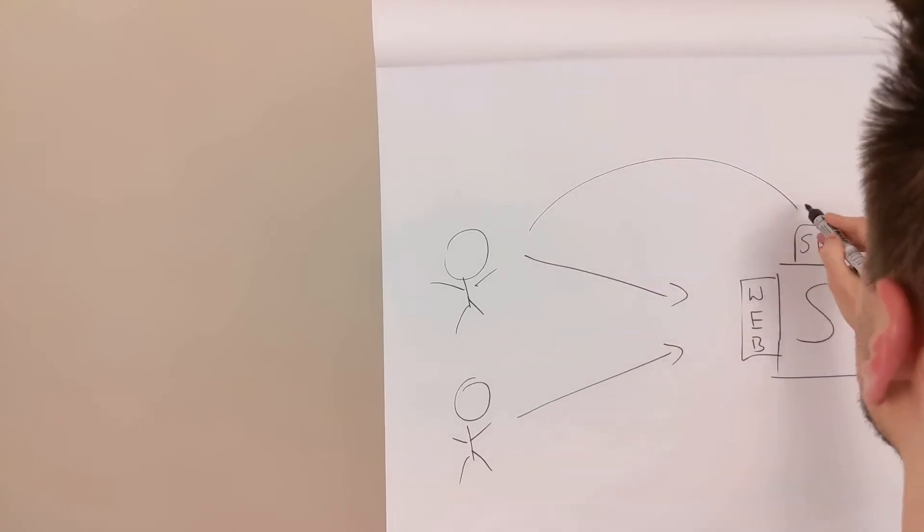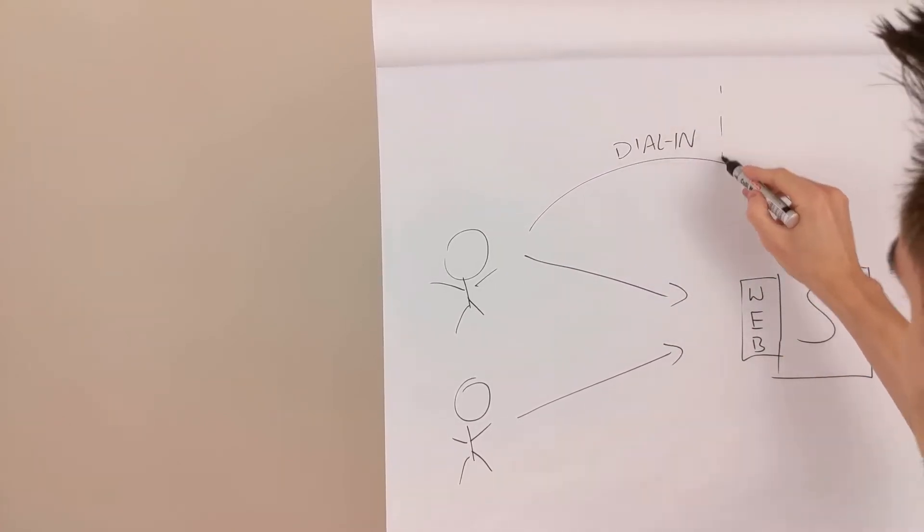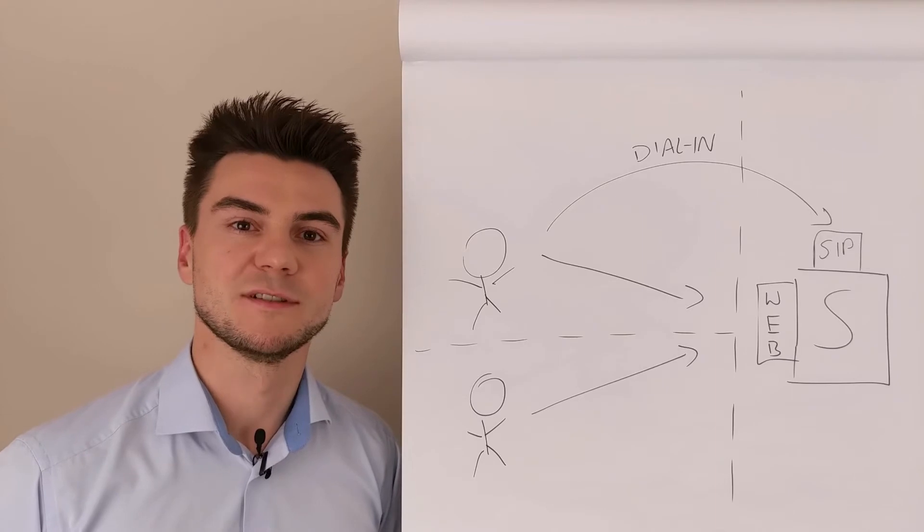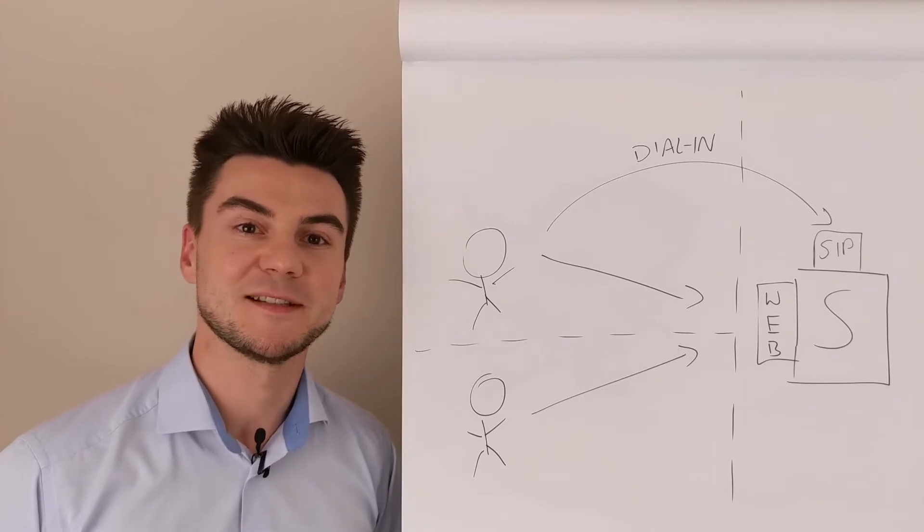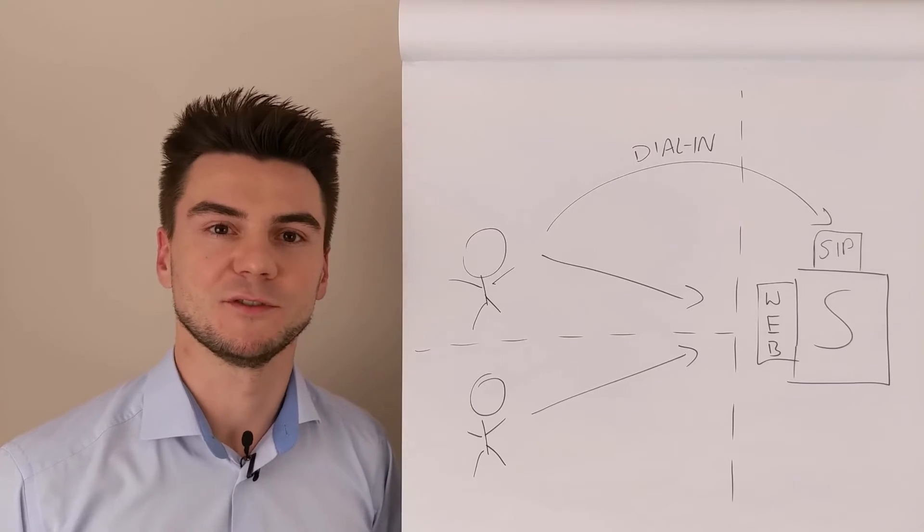Now the biggest difference between the on-prem and cloud is the ownership of the server. So where do we put the trust boundary? Who can attack the system? Now in software as a service solution, such as Zoom or cloud-based Teams, the server is owned by a third party and located somewhere on the internet.